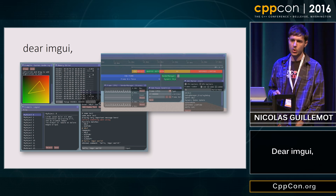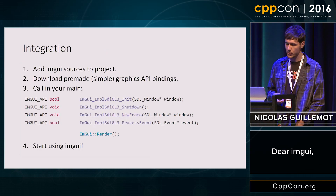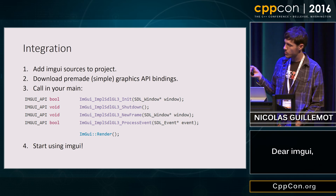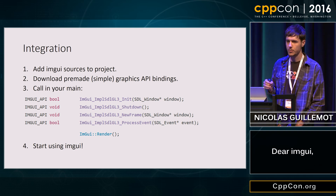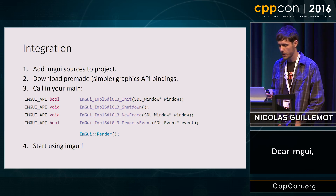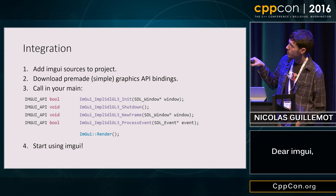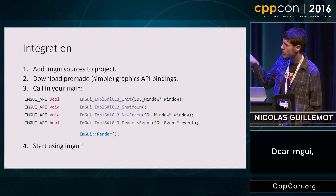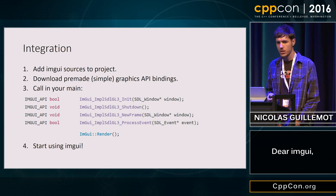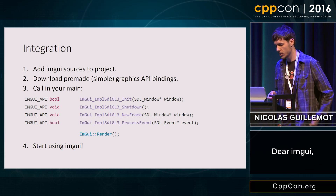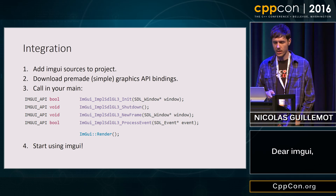If you want to use Dear ImGui in your programs today, there are only a few steps. First, go to the Dear ImGui GitHub — I'll show the link at the end of this talk — grab the sources, just add them to your project, and download the pre-made bindings they have. They have bindings for DirectX, OpenGL, and all operating systems. You have a few callbacks to put into your main: just call init, new frame, and process events, and call render at the end of every loop. After that, you basically just start putting in ImGui calls — write text or button or whatever — and it'll start generating ImGui widgets.